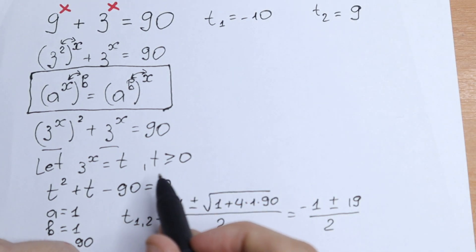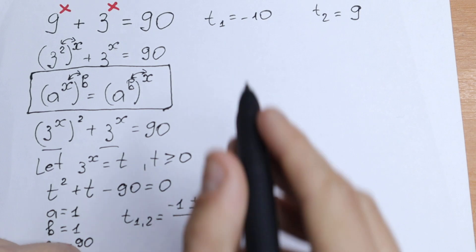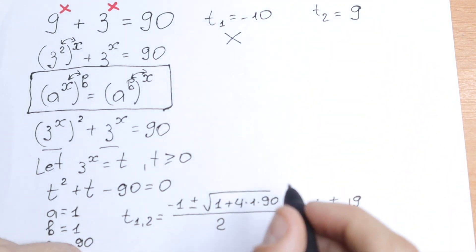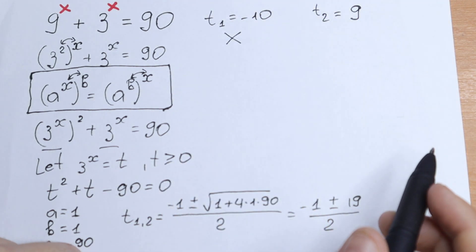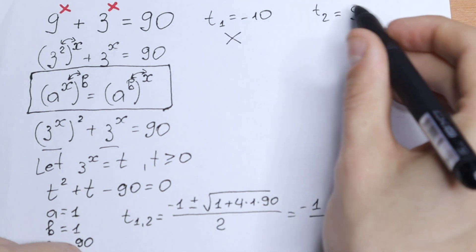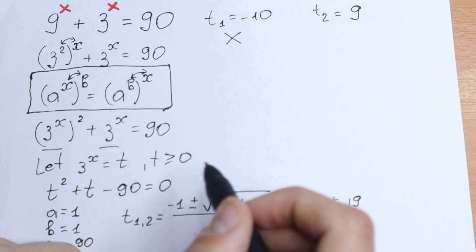And take a look. We wrote that our t needs to be positive. So we don't need this t1 equal to minus 10. This is not good for us. Take a look right here. We have a really good number. And let's go to our substitution.